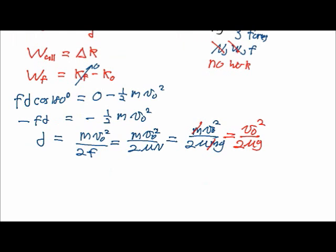Alright, so let's get our calculator and calculate that number. So the original velocity was 11.3 meters per second, so we'll square that, divide it by two, divided by 0.6—that was the coefficient of friction—divided by 9.8, and that gives us 10.9 meters.